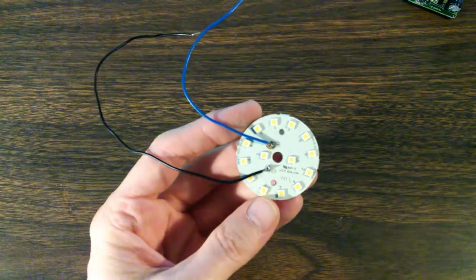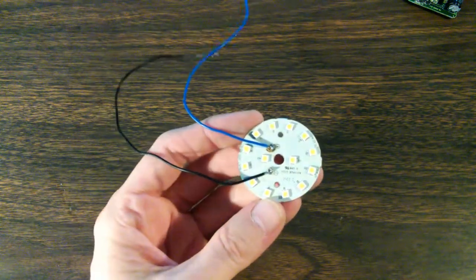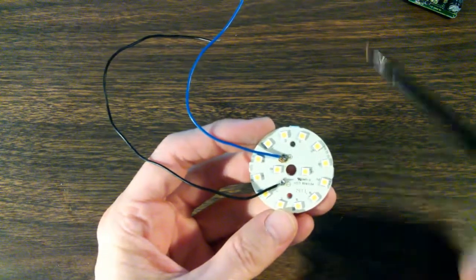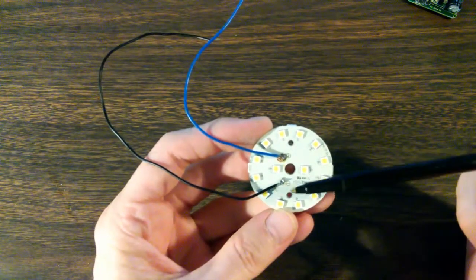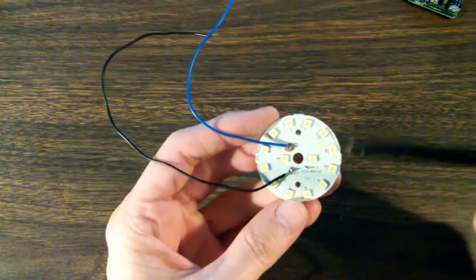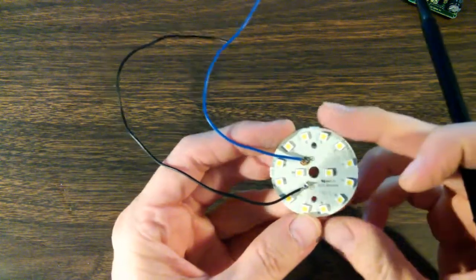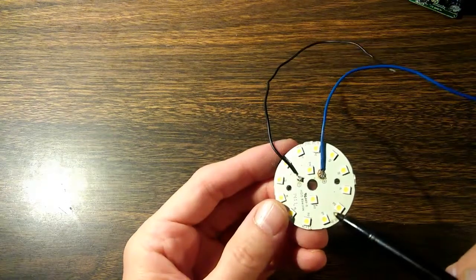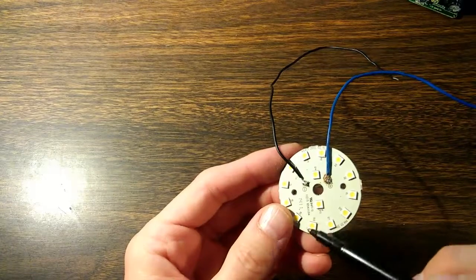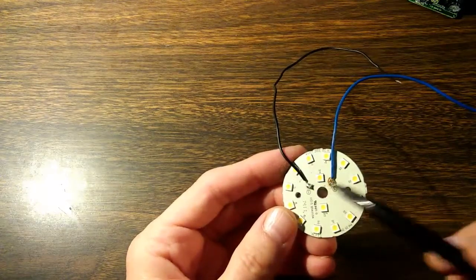Here's a disk of LEDs. There's 14 on this disk. It appears to be divided into two parallel circuits, seven LEDs on each. One, two, three, four, five, six, seven. And then one, two, three, four, five, six, seven.